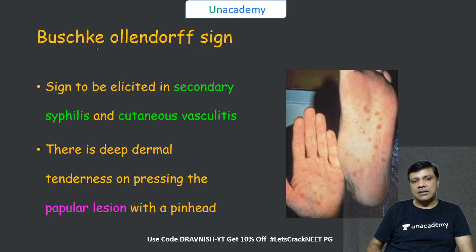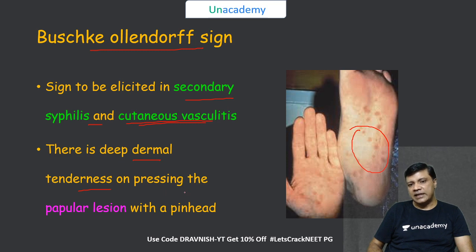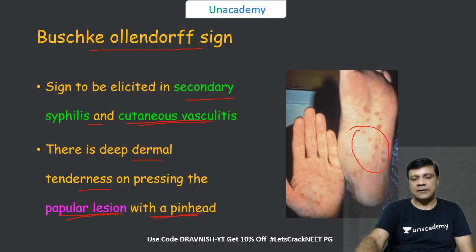The Buschke-Ollendorff sign is seen in secondary syphilis and cutaneous vasculitis. It is the presence of deep dermal tenderness elicited by pressing the papular lesions of secondary syphilis or cutaneous vasculitis with a pinhead. This is called a positive Buschke-Ollendorff sign.